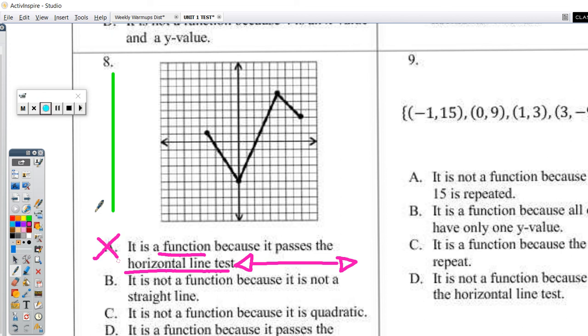Let's look at answer choice B. It is not a function because it is not a straight line. That is not true. Functions can be other things besides straight lines, or they could be straight lines. It just depends on the test we're about to do. Let's look at C. It is not a function because it is a quadratic.